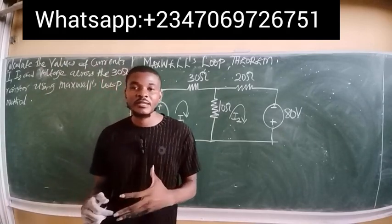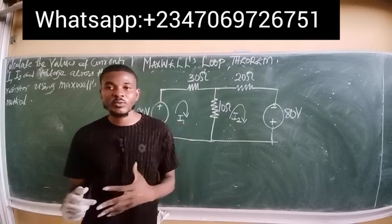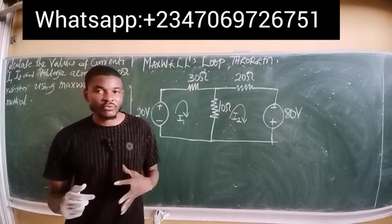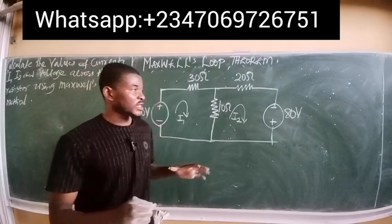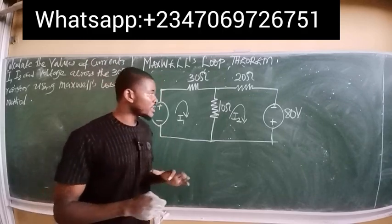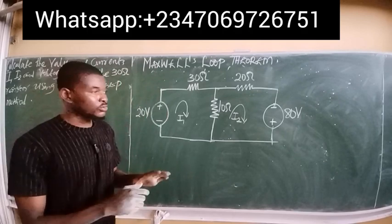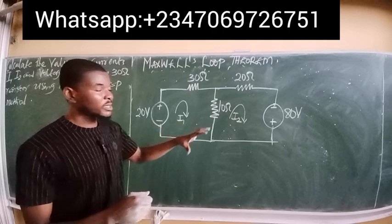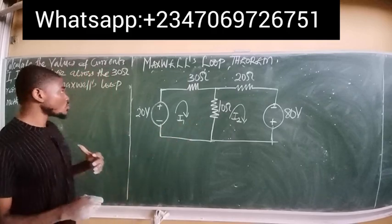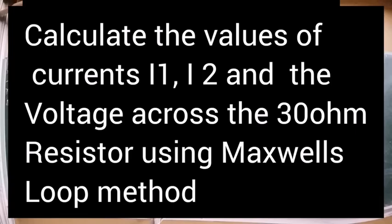In the previous video, we explained Maxwell's loop theorem simply by applying Kirchhoff's voltage law to electrical circuit analysis. In this video, we are going to apply everything we learned to tackle the problem on this circuit. The question says: calculate the values of the currents I1, I2, and the voltage across the 30 ohm resistor using Maxwell's loop method.